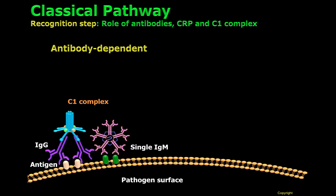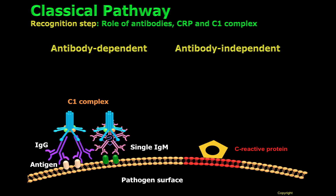C1 can also recognize a single IgM bound to pathogens. The second mechanism is independent of antibodies, or so-called antibody-independent recognition of danger. Here, CRP, or C-reactive protein, plays a fundamental role.